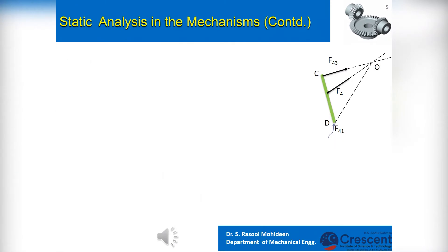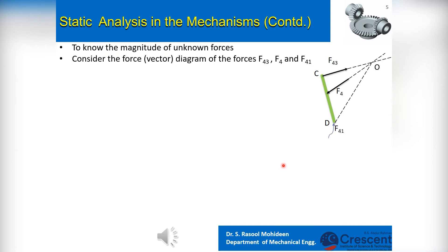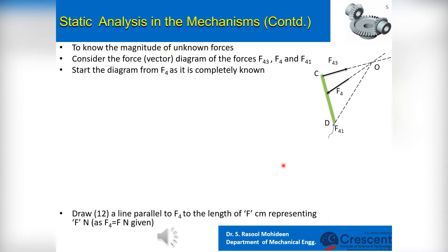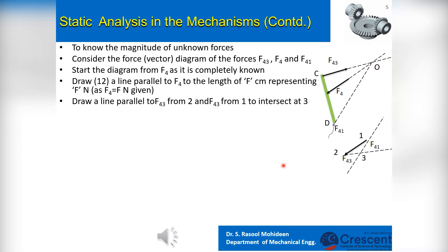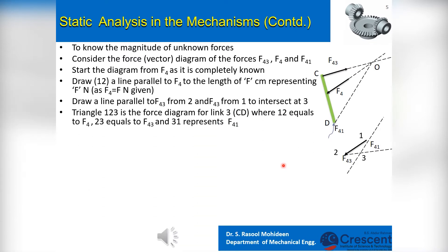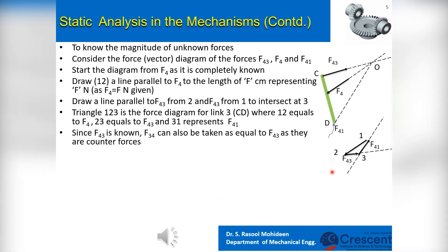Having found the line of action of constraint forces, now we need to know their magnitude. Consider the force or vector diagram of the forces F43, F4, and F41. Start drawing the vector diagram for F4 as it is completely known. Draw a line parallel to F4 to the length representing Fn, from point 1 to point 2. Draw a line parallel to F43 from point 2 and F41 from point 1 to intersect at point 3. The triangle is the force polygon for forces acting on link 3, that is link CD, where line 1-2 equals applied force F4, line 2-3 equals constraint force F43, and line 3-1 represents constraint force F41. Since F43 is known, F34 can also be taken as equal to F43 as they are counter forces.